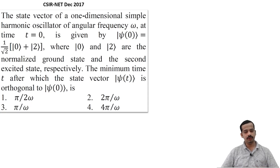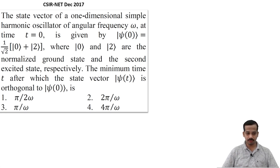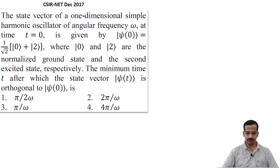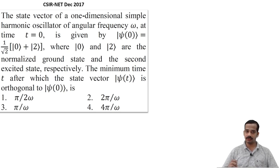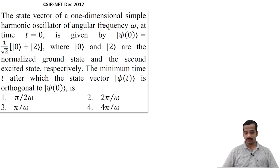Let me take another question — CSIR NET December 2017. Pause the video and read the question carefully. The state vector of a one-dimensional simple harmonic oscillator of angular frequency omega at time t equal to 0 is given by |psi-0⟩ equal to (1 by root 2)(|0⟩ plus |2⟩), where |0⟩ and |2⟩ are the normalized ground state and second excited state respectively. What is the minimum time t after which the state psi(t) is orthogonal to the initial state psi(0)?